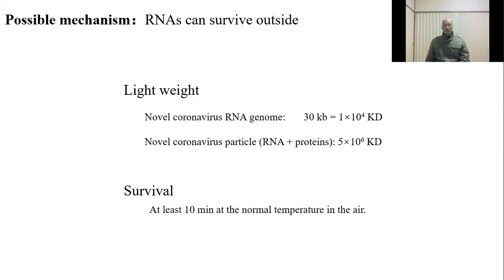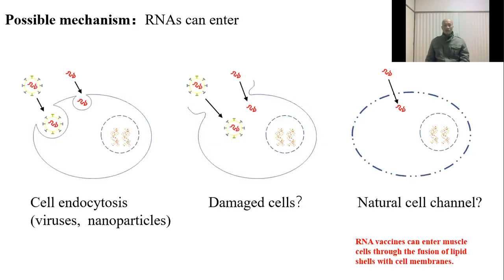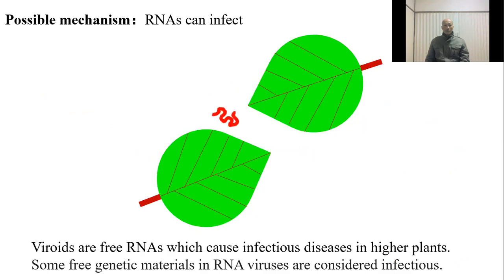Viral RNA has higher weight than viral particles and they are easier to flow in the air. RNA can survive in the air at room temperature for less than a few minutes — it is enough to transmit viral RNA from one individual to another. Some studies report that cells can take in small particles on the surface of the cell. Viral RNA can also enter damaged cells and use the material to replicate.